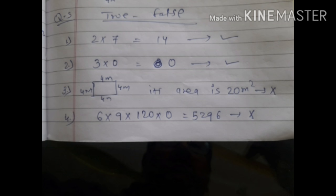For example, thousand multiply zero, the answer is zero. Koi bhi number ko zero se multiply karte hai to answer zero hi milta hai. Third, one figure is given and its area is said to be twenty meter square.